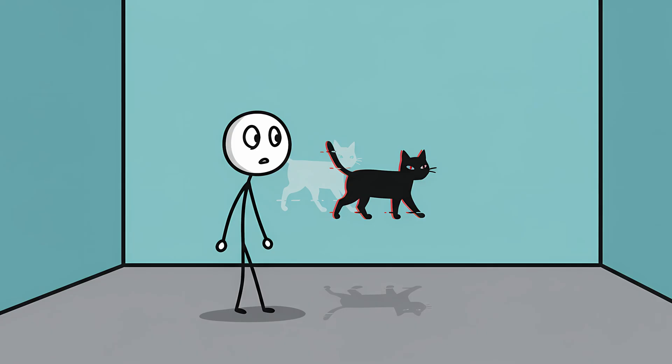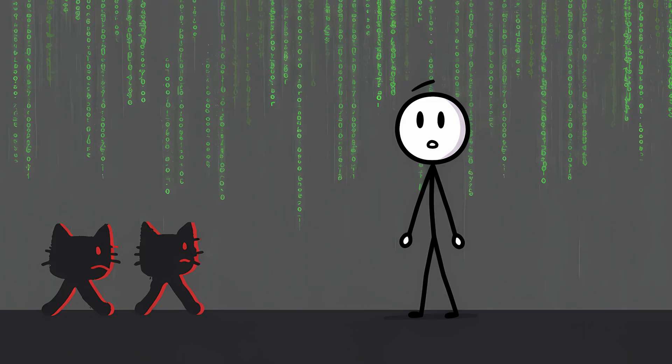In The Matrix, when Neo sees the same black cat walk by twice, Trinity ominously explains. Déjà vu is usually a glitch in The Matrix. It happens when they change something. And with that one line of dialogue, a generation of people had a cool, sci-fi, vaguely paranoid explanation for a common neurological hiccup.